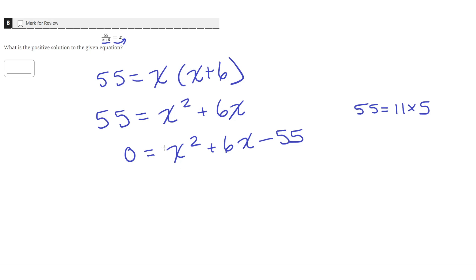By looking at the factors of the a term, which in this case is just a 1, multiplied with the c term, which is negative 55, and the factors of negative 55 can be added together to equal 6.